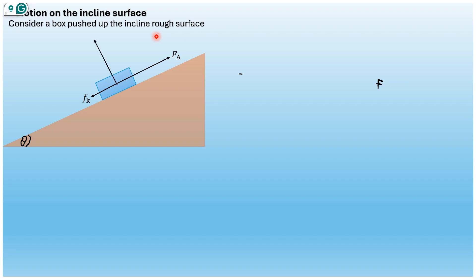We also have the normal force, which is perpendicular to the surface. The frictional force pulls towards the left-hand side, opposing the motion of the box. The box does not move in the direction of the normal force — it only moves in the direction of the applied force or the frictional force. In this case, the friction force is very small compared to the magnitude of the applied force, as shown by the arrow lengths.